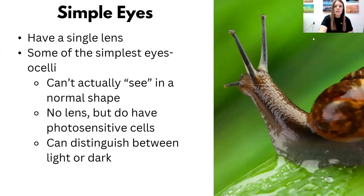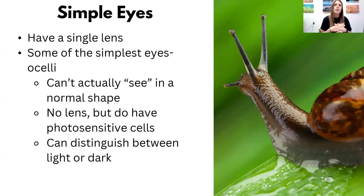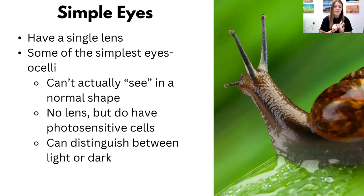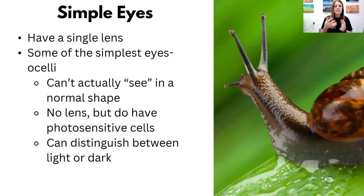Simple eyes have a single lens. The simplest eyes are things like in snails — they have these ocelli and can't really see an image like people can. They don't have lenses, but they have photosensitive cells so they can detect light versus dark. They can also distinguish very simple things like is it warm or cold — very rudimentary skills — but mostly is it light or dark is what those very simple single-lens eyes are looking for.